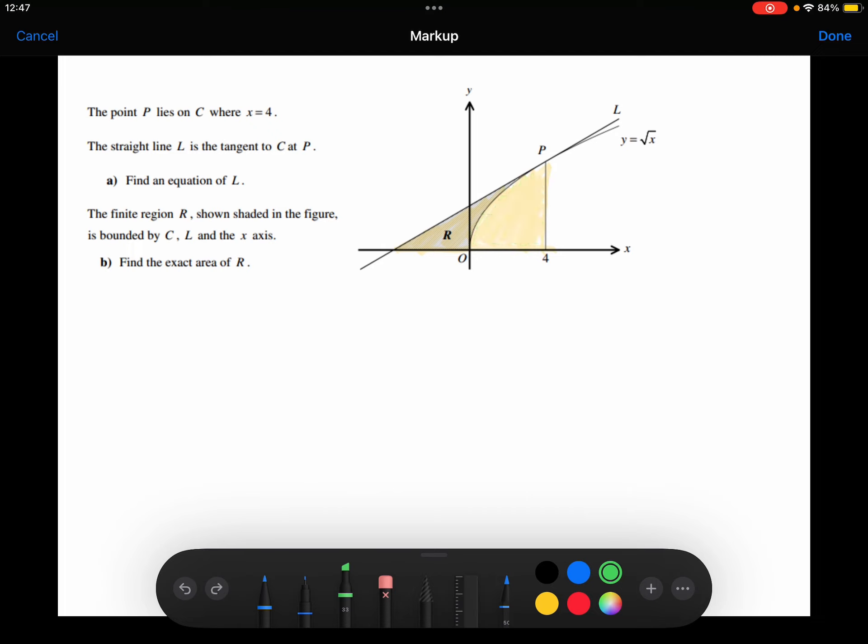So let's consider that triangle first of all. Remember that the coordinate of P was (4, 2). So I know the height of this triangle is 4.